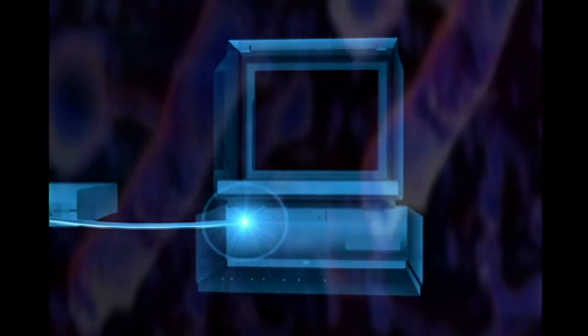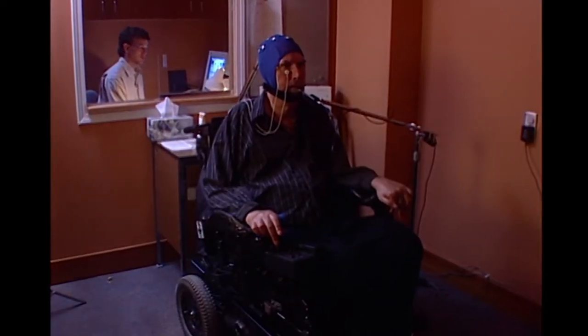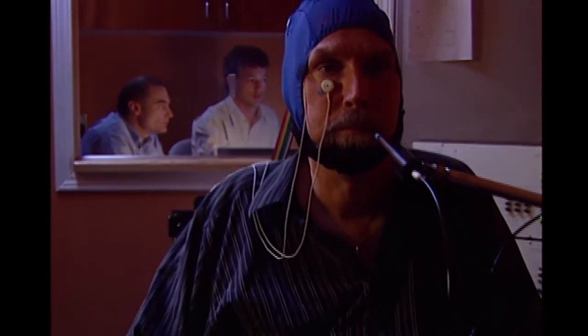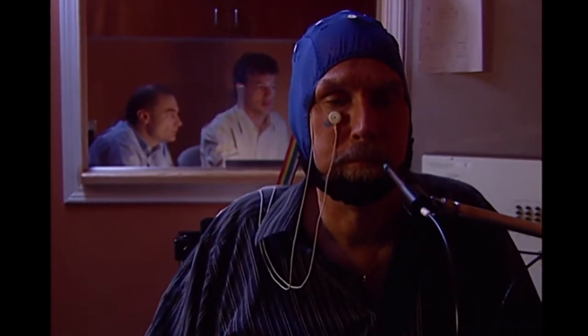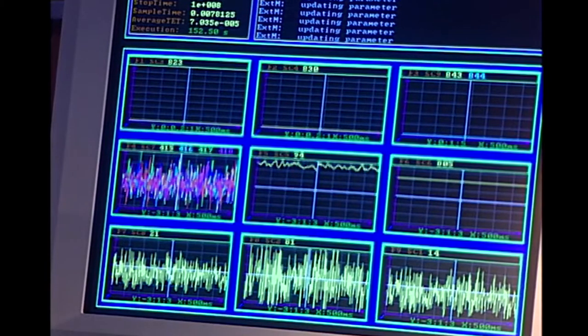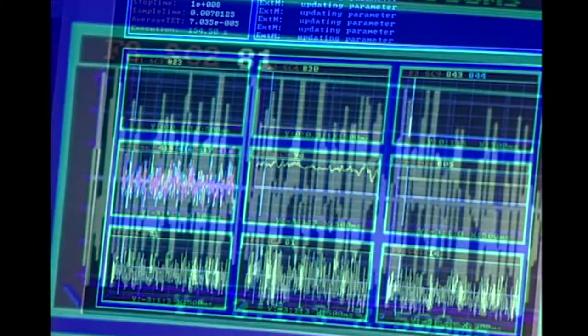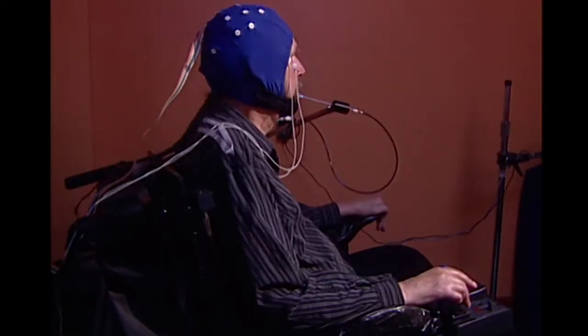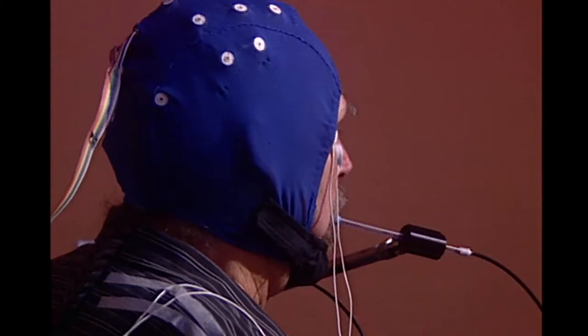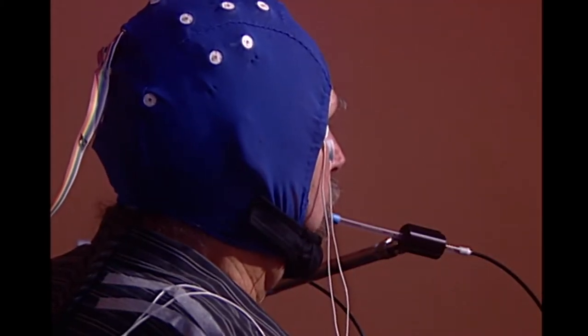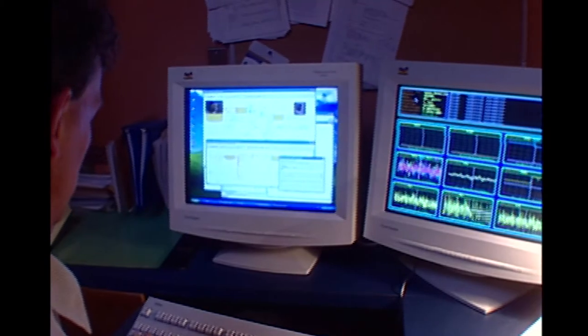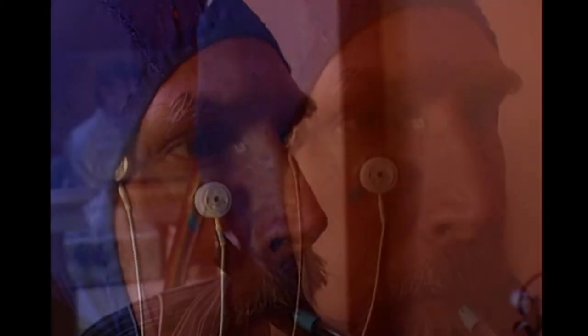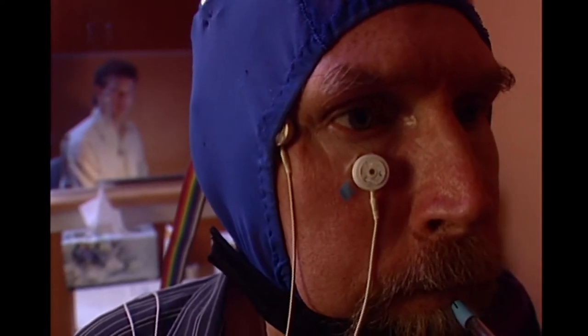My method of making the switch work is that I mentally and physically try to move my finger, which is paralyzed. By doing that, they can see me physically trying to move something, which is a measurable response. I know that by trying to move my finger, I can make something happen on the computer.